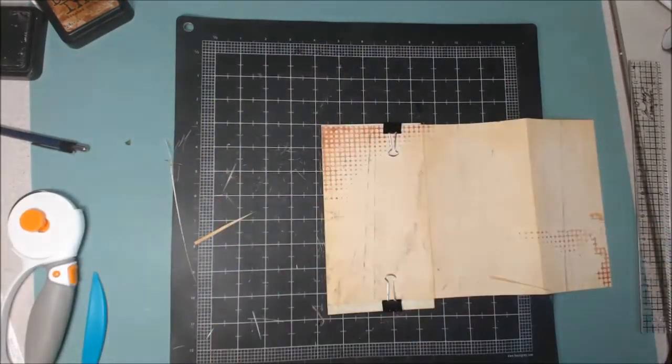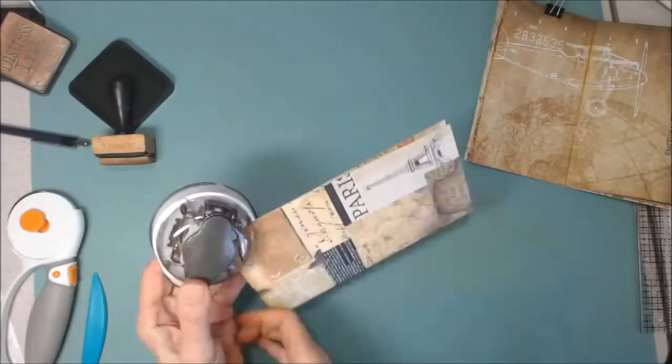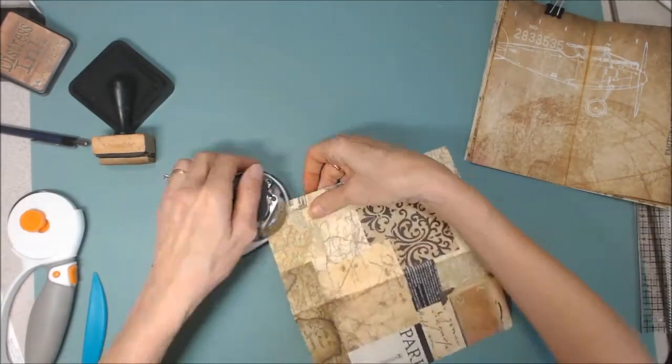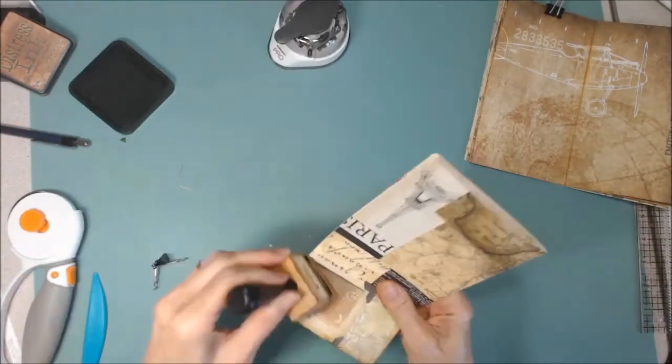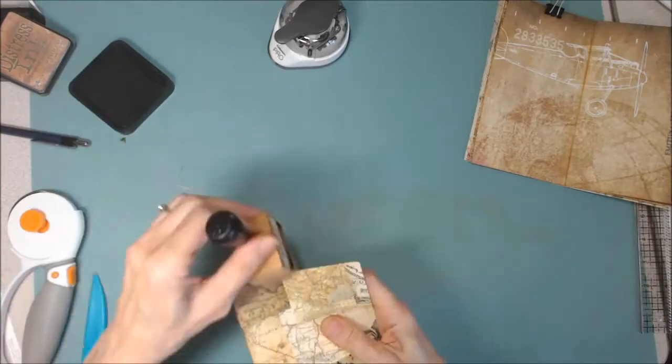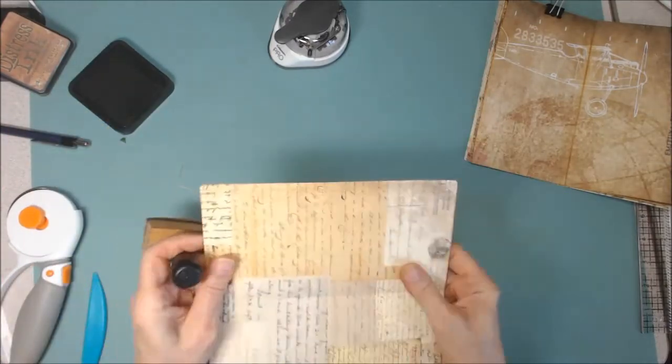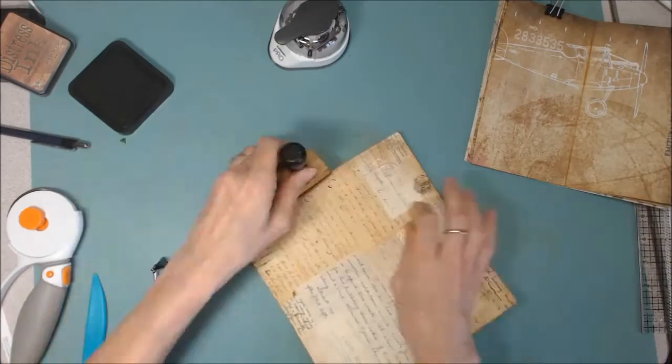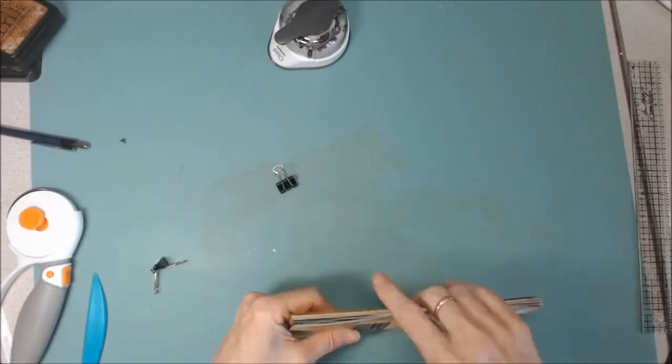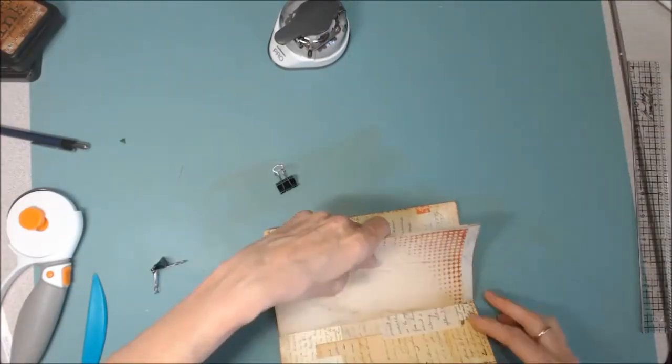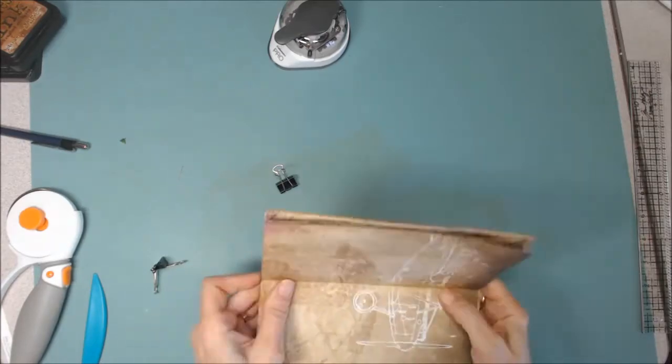Now, I have a cover for this signature. It's a little bit larger than the pages inside. So, I just want to ink the edges and I'm clipping all my corners. So, now I want to assemble the signature. I'll take the cover and the inner pages, clip them together and staple just like I did the other one.